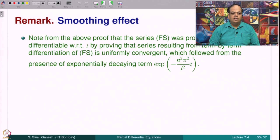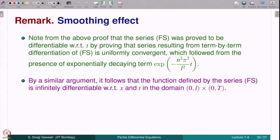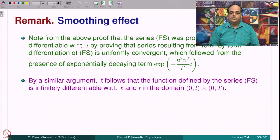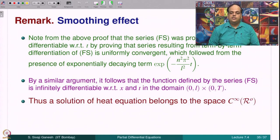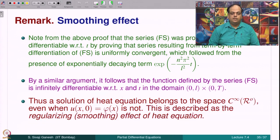Remark — the smoothing effect. From the above proof, the Fourier series can be differentiated with respect to t because the series from term-by-term differentiation converges uniformly, which follows from the presence of the exponentially decaying factor. By a similar argument, the function defined by the series is infinitely differentiable with respect to x and t in the domain (0,L) × (0,T). Thus a solution of the heat equation belongs to C∞ in the interior of the rectangle, even when the initial data φ is merely continuous. This is the regularizing or smoothing effect of the heat equation.